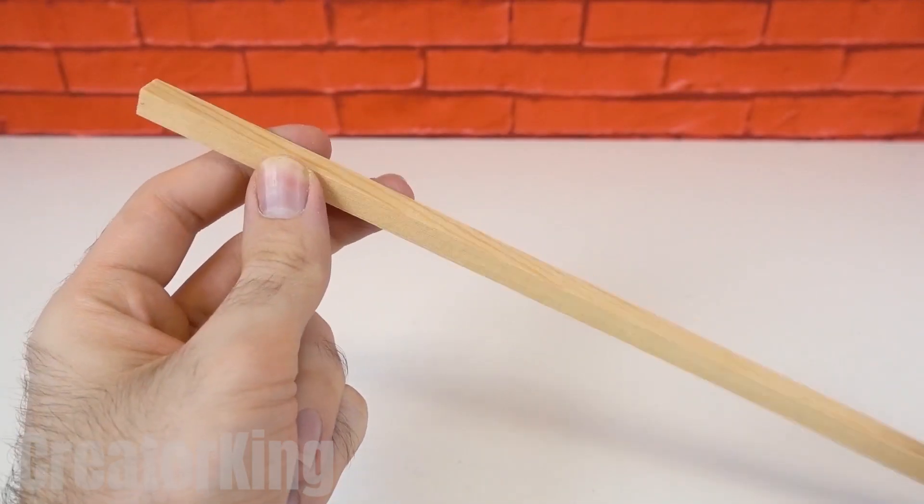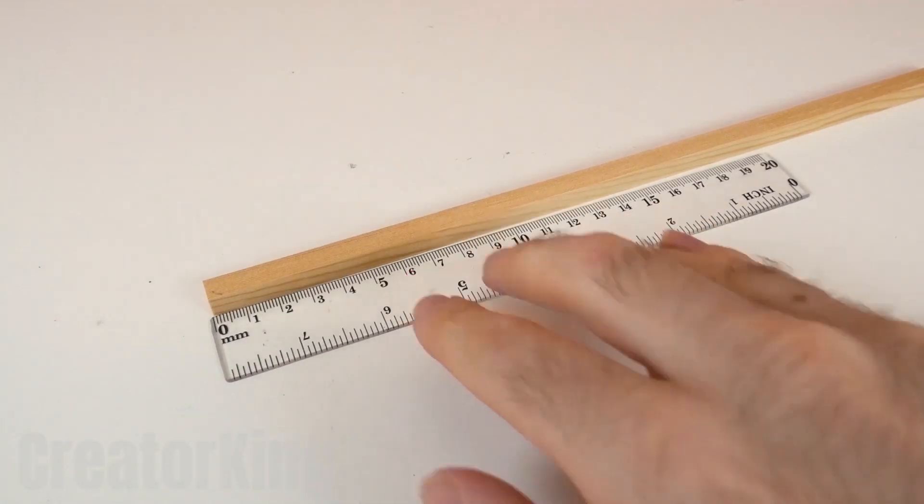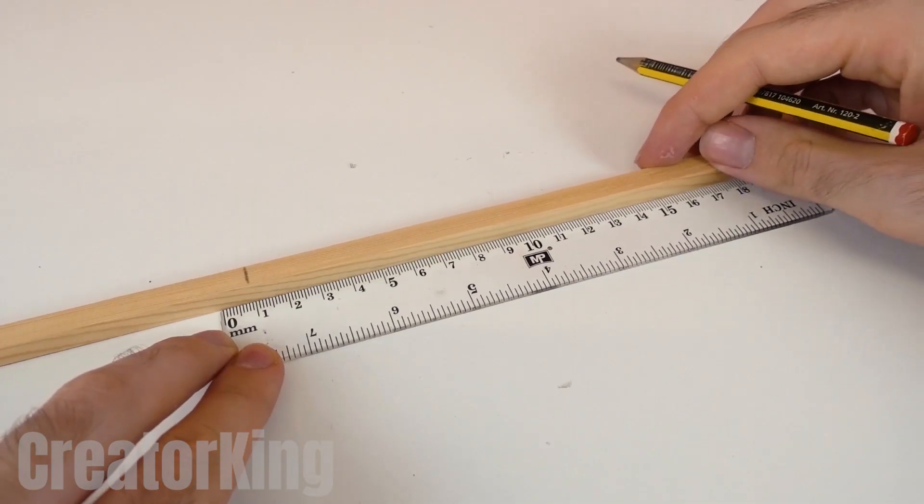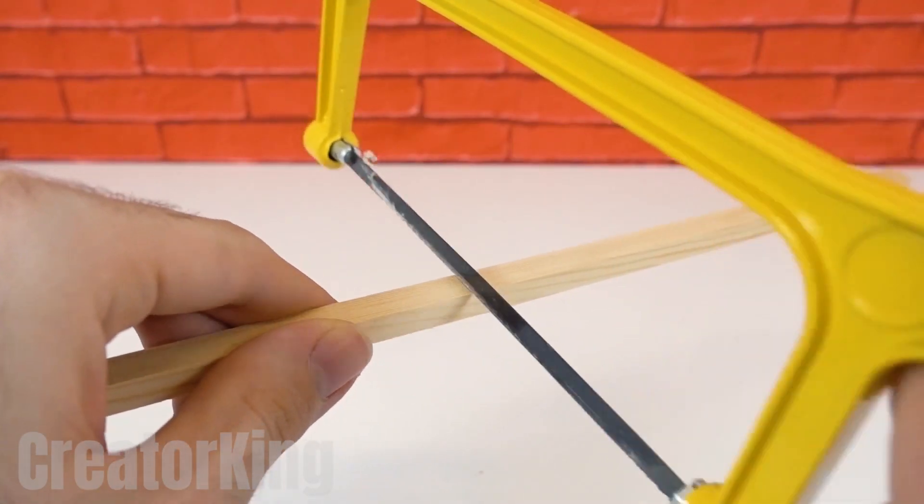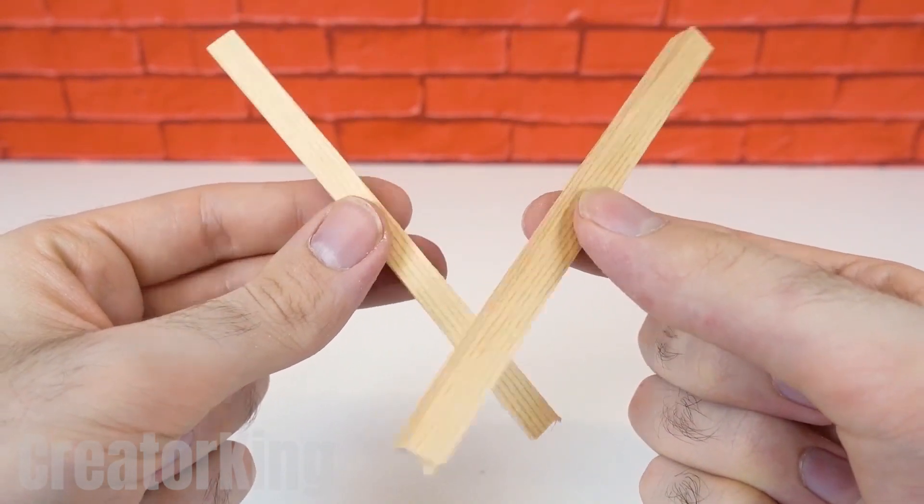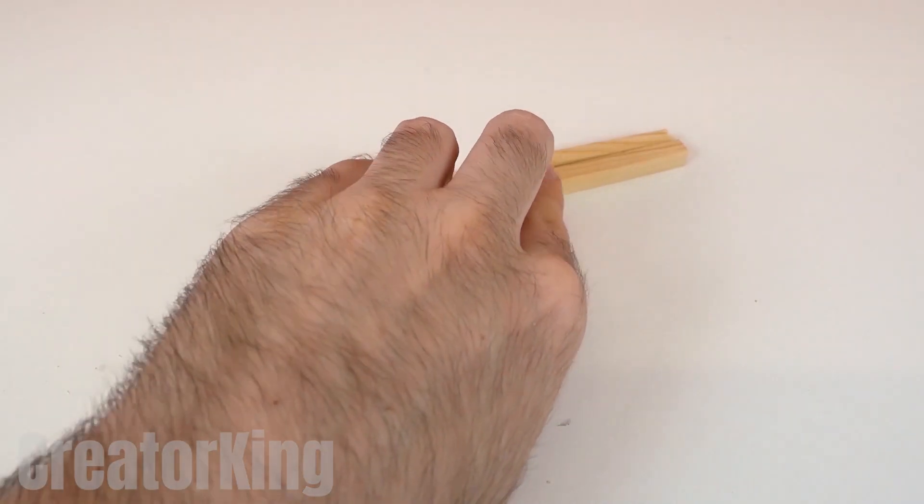Now, take a wooden stick, but this time with a square shape. Measure it and make two 12-centimeter marks. Then, saw it with a handsaw. With the two pieces ready, mark them both right in the middle to glue them together, forming a cross.